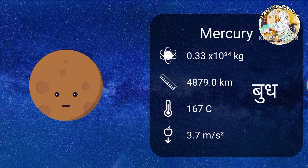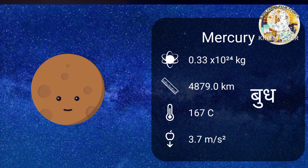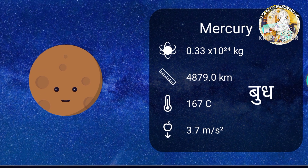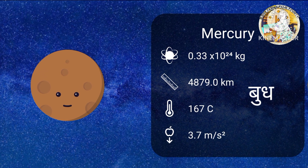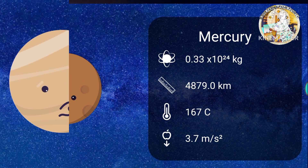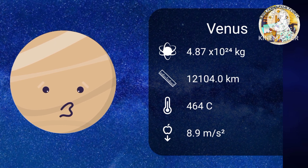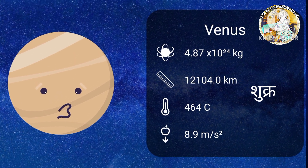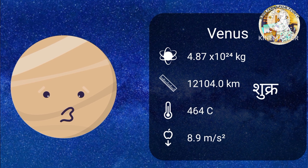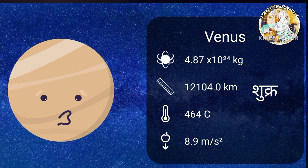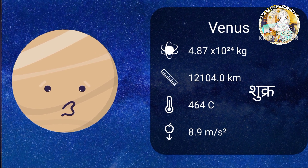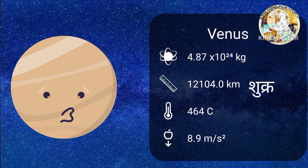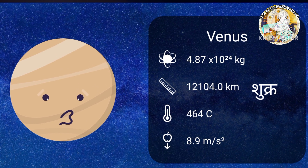Mercury is the smallest planet in the solar system and it is also the planet closest to the sun. V-E-N-U-S, Venus, Sukra. Venus is the second planet from the sun and the sixth largest planet.